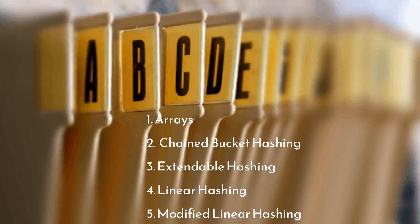Not just AVL trees — you can use many different data structures to create indexes and make data access patterns faster. Arrays use minimal space and the total index size is predictable, but the update complexity is O(n). Other algorithms include chained bucket hashing, extendable hashing, linear hashing, and modified linear hashing, though those are beyond the current scope.